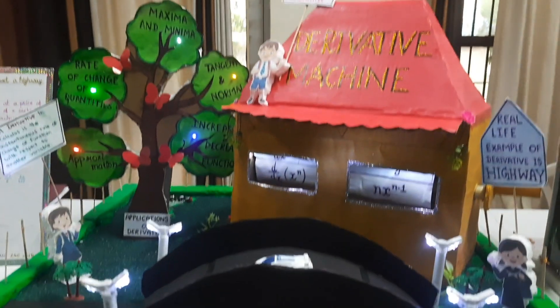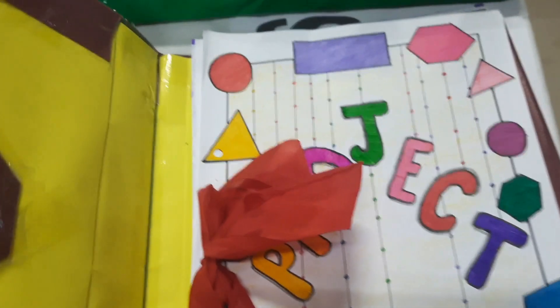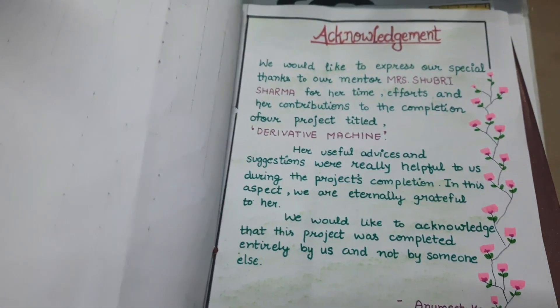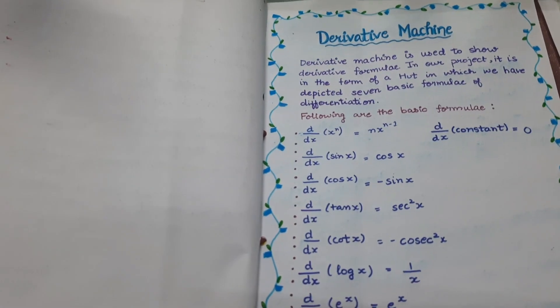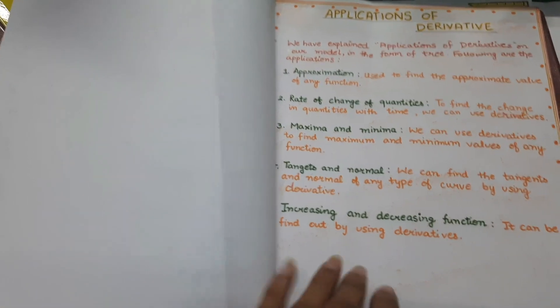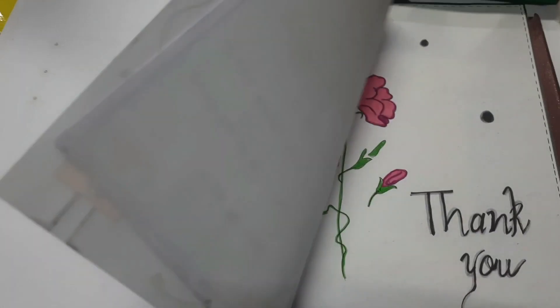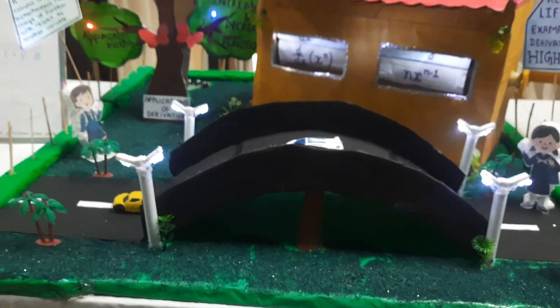So this is all about the derivative machine — this is the full-fledged model. Now come to the file which the students of class 11th have made, because the contribution of class 11th is in this model. Their project file is like this — beautifully made by class 11th. There are two students who have made this, in which they have written the 10 formulas of the derivative machine, their applications, and questions based on real-life examples.